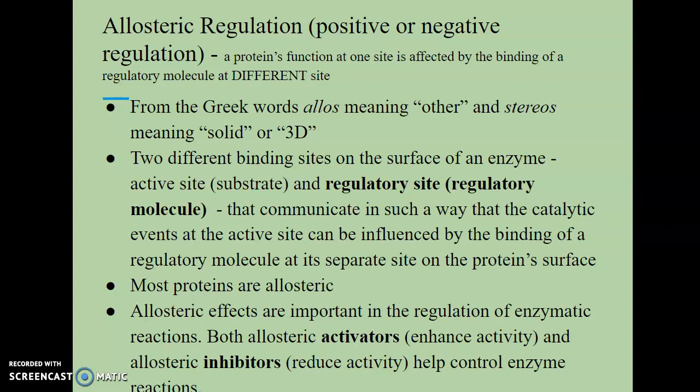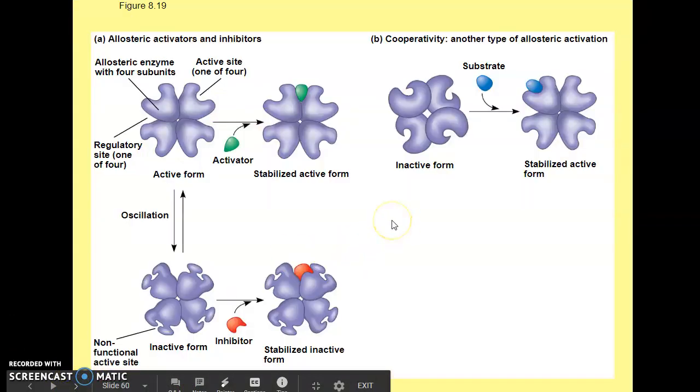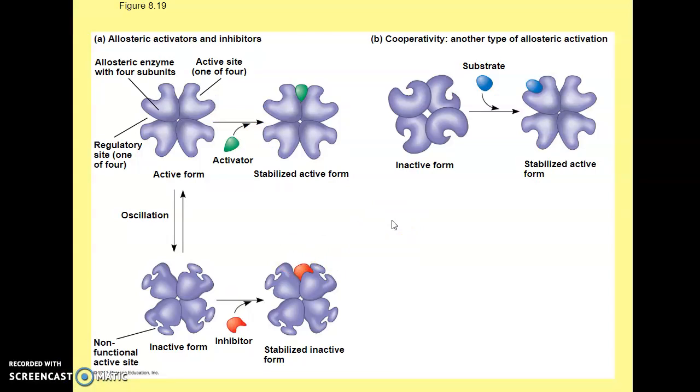Most proteins discovered today are considered allosteric. Allosteric effects are important in the regulation of enzymatic reactions — allosteric activators can enhance activity and allosteric inhibitors can reduce activity, but both help control enzyme reactions. An activator can activate an enzyme and an inhibitor can inhibit the enzyme.